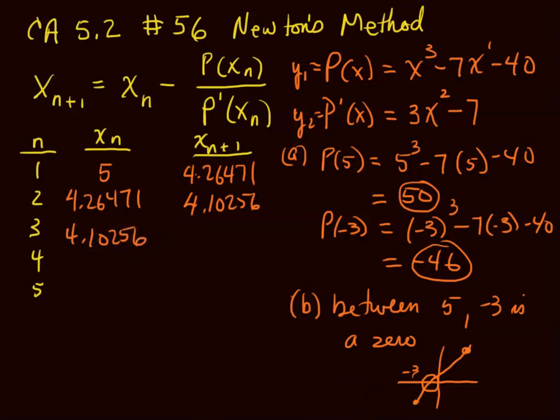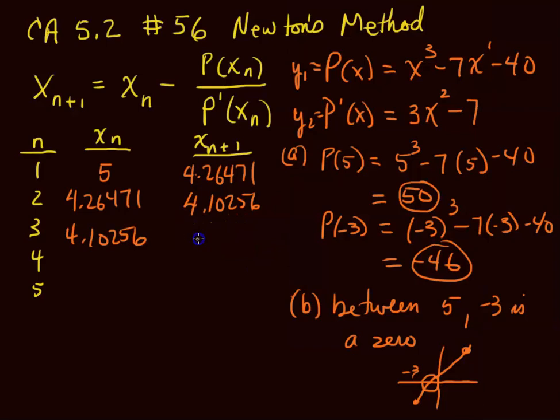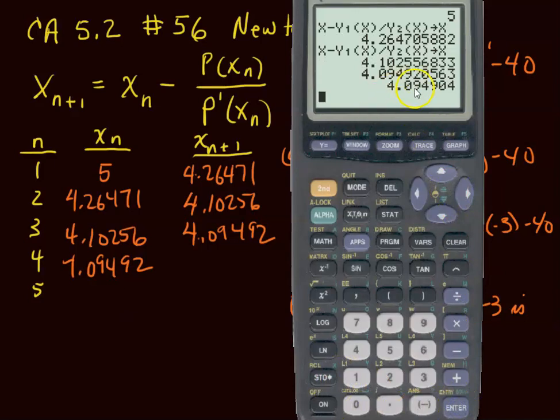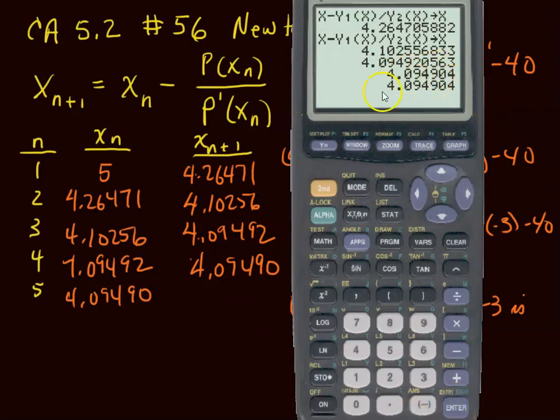But that's also my x sub 3. Now I calculate the next one. You can just press enter: 4.09492. But that also goes here. And then calculate it again: 4.09490. And that goes here also. Let's calculate it again. And what you find is, at least to these 5 decimal places, we get the same answer. We've found a zero, a root.